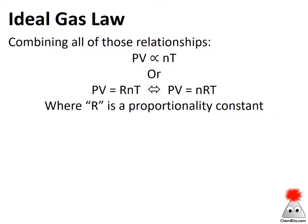If we combine all of those, we come up with the ideal gas law. Volume is proportional to number of moles and temperature, and inversely proportional to pressure. Bringing that together, PV — pressure times volume — is proportional to the number of moles times the temperature. Proportionalities are great, but easier to work with as equalities. So if we add a proportionality constant R, then PV equals nRT.